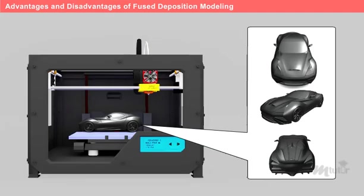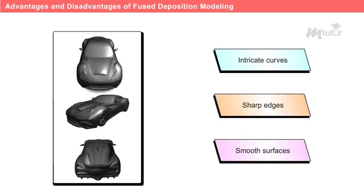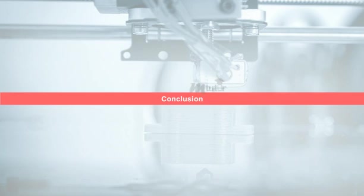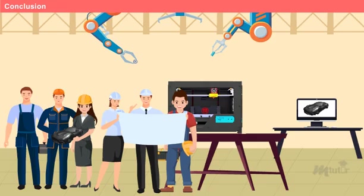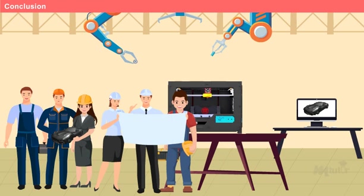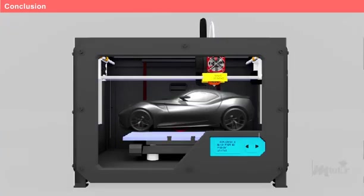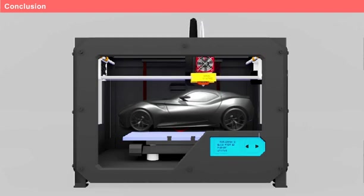The FDM printer was loaded with a spool of PLA filament, a material known for its ease of use and environmentally friendly properties. In the initial phase, they decided to stick with PLA due to its versatility and familiarity. As the FDM printer completed its final layer, the team gathered around the completed prototype, marveling at the level of detail and accuracy they had achieved. The FDM printed model showcased the intricate curves, sharp edges, and smooth surfaces they had envisioned from the start. The prototype not only met their aesthetic expectations but also demonstrated remarkable mechanical strength, providing confidence in the robustness and functionality of their design. With their successful FDM prototype in hand, the team knew they had made the right decision in adopting fused deposition modeling.